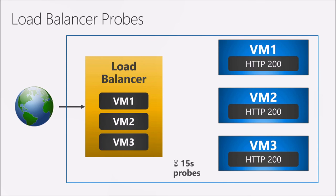It also works when a machine actually goes down. If VM2 stops responding, the load balancer gets no response to its probe every 15 seconds and immediately takes it out of rotation — no traffic is sent to that VM. If the VM starts responding again, it continues to receive probes every 15 seconds, and once it comes back to life, the load balancer will direct traffic to it again.